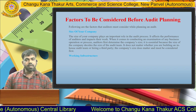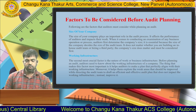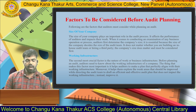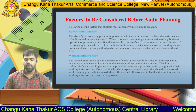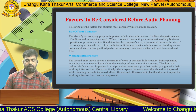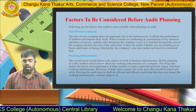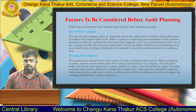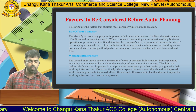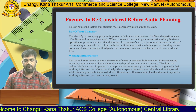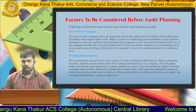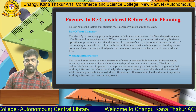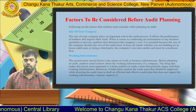The second factor is working infrastructure. The auditor needs to know about the working infrastructure of a company before planning the audit. This is crucial because it helps the auditor make a plan that perfectly aligns with the working infrastructure and helps explore weak areas that should be improved, while directing the audit team to draft an efficient and effective audit plan that does not disrupt but rather improves the working infrastructure.